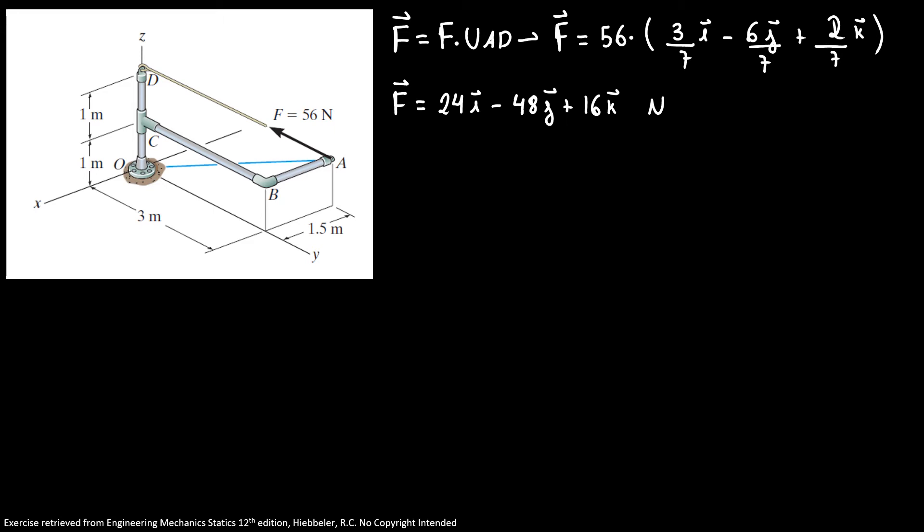Now, if I want to find my force along AO, that's parallel, that's along this line here to have AO parallel. I need to do the dot product between my two vectors, my vector Cartesian form of my vector F, and the unit vector AO.